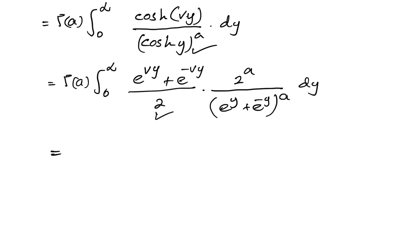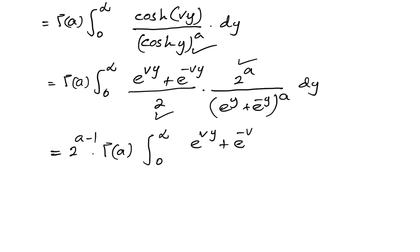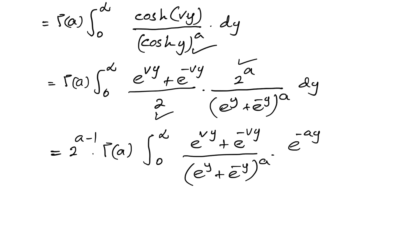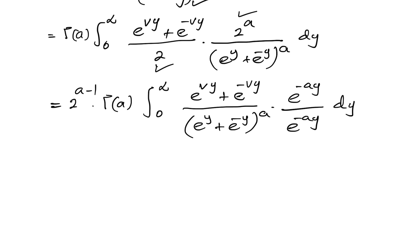Simplifying the powers of 2, we get 2^(a-1) · Γ(a) times the integral from 0 to infinity of (e^(vy) + e^(-vy)) over (e^y + e^(-y)) to the a power dy. We then multiply both numerator and denominator by e^(-ay).